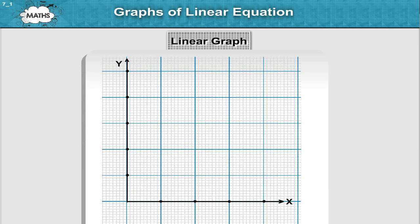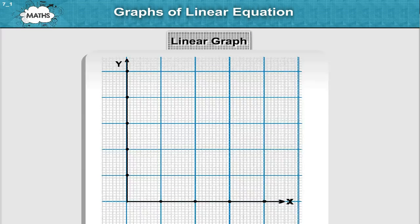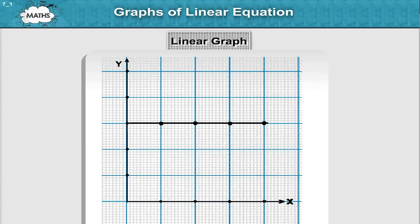Graphs of Linear Equation: Linear Graph. A linear graph consists of bits of line segments joined consecutively. Sometimes the graph may be a whole unbroken line. Such graph is called a linear graph.